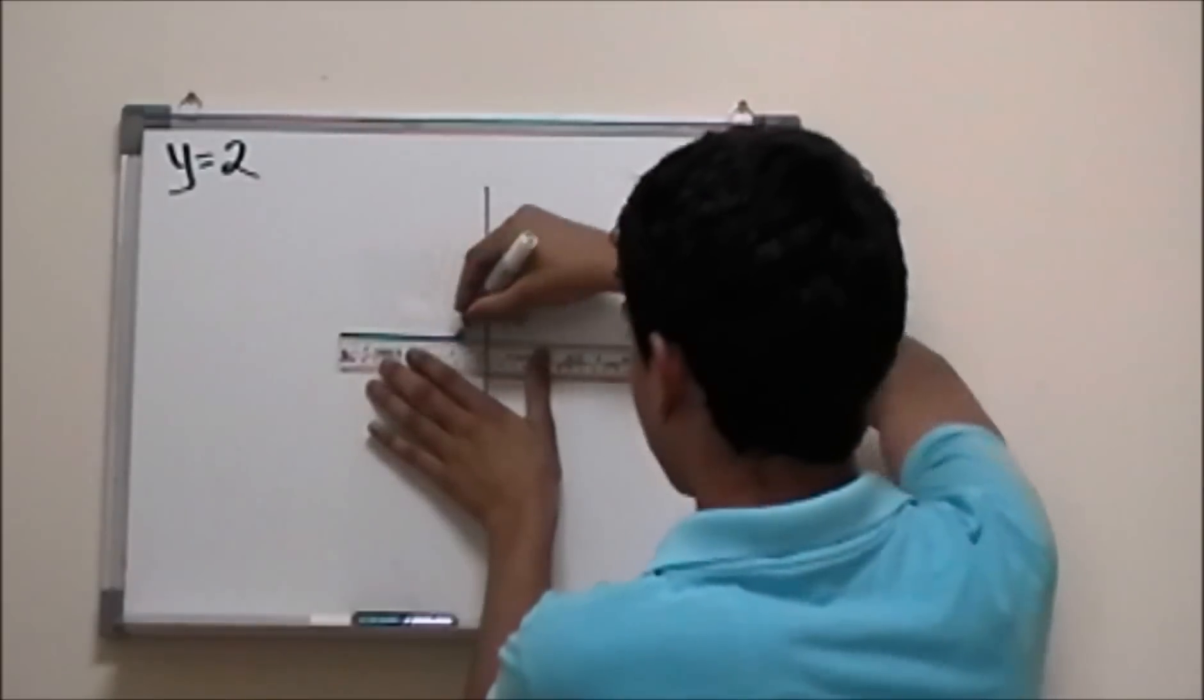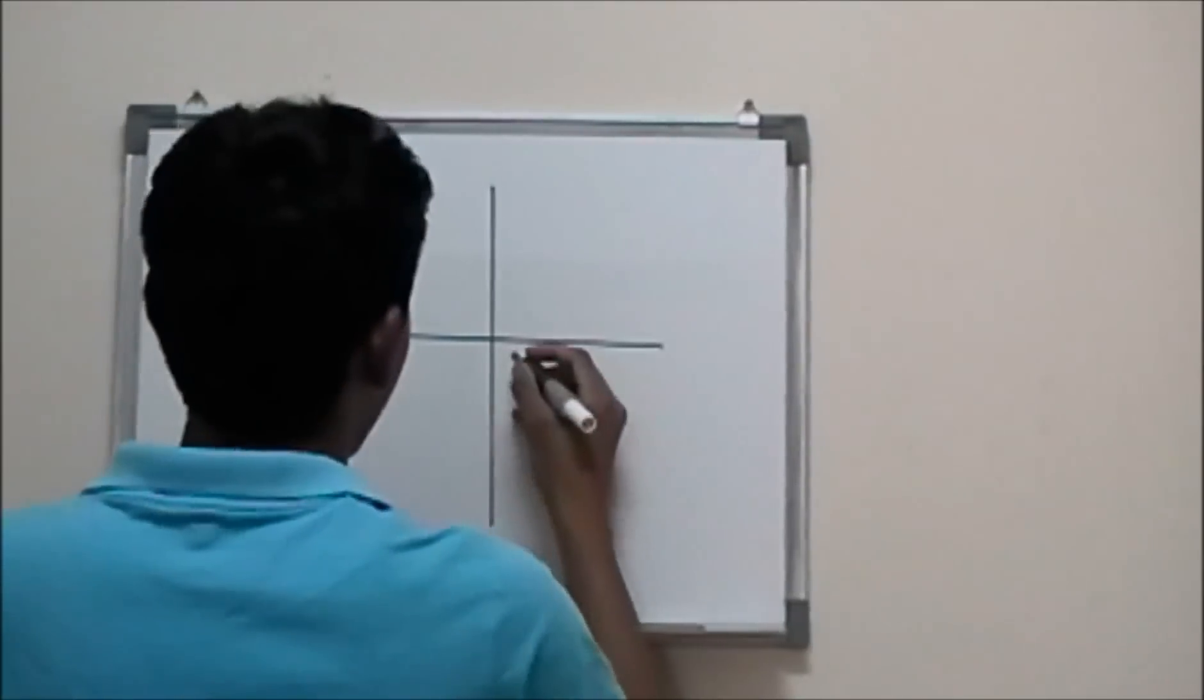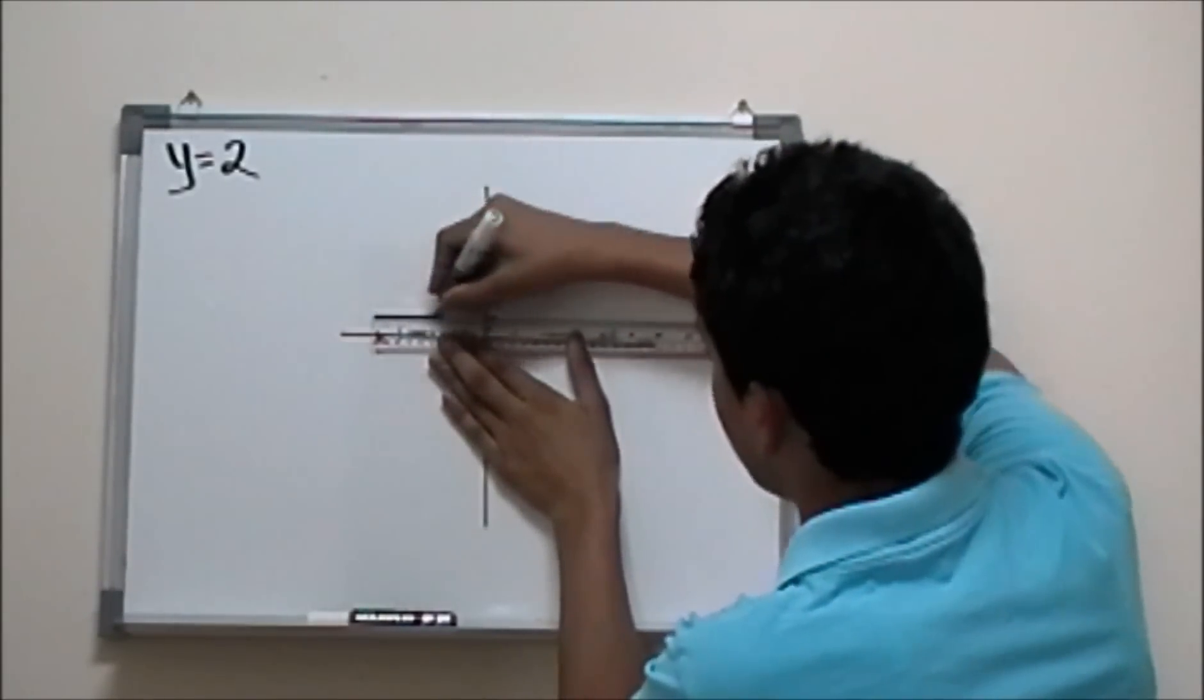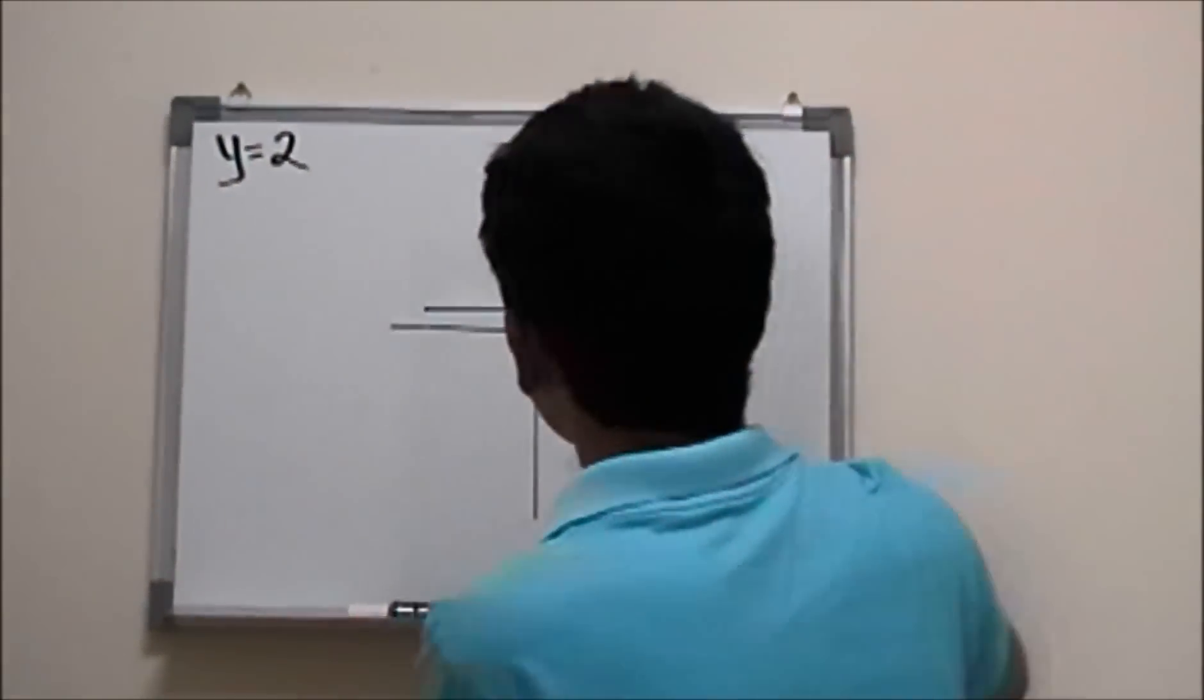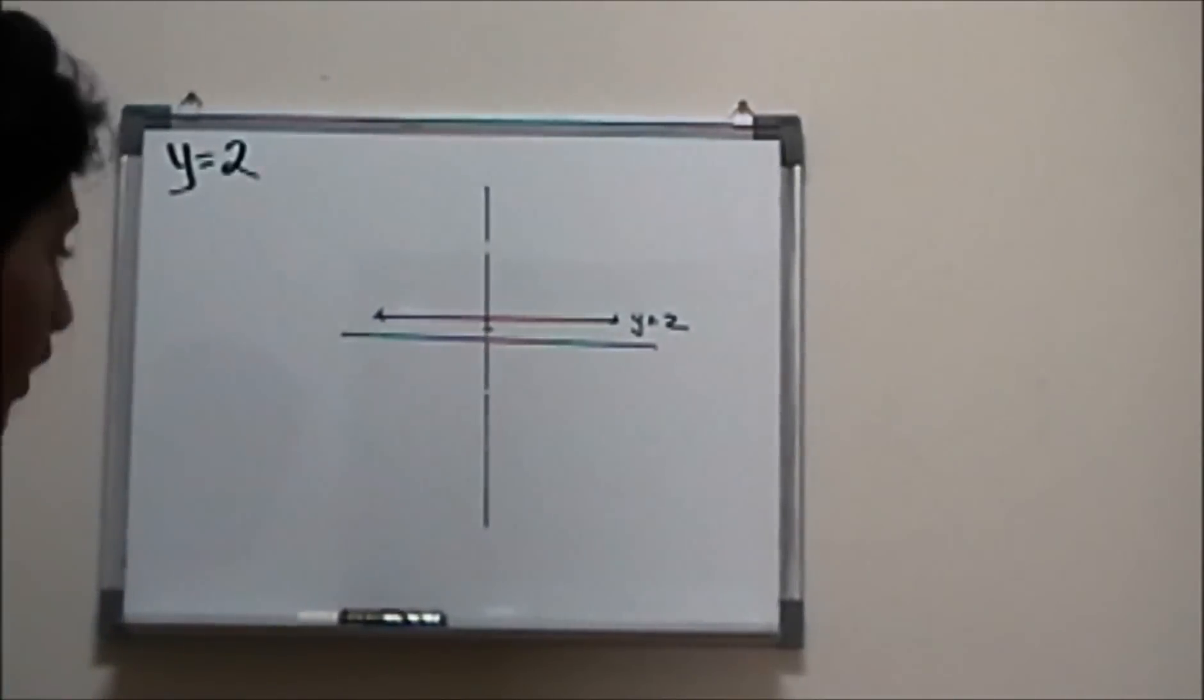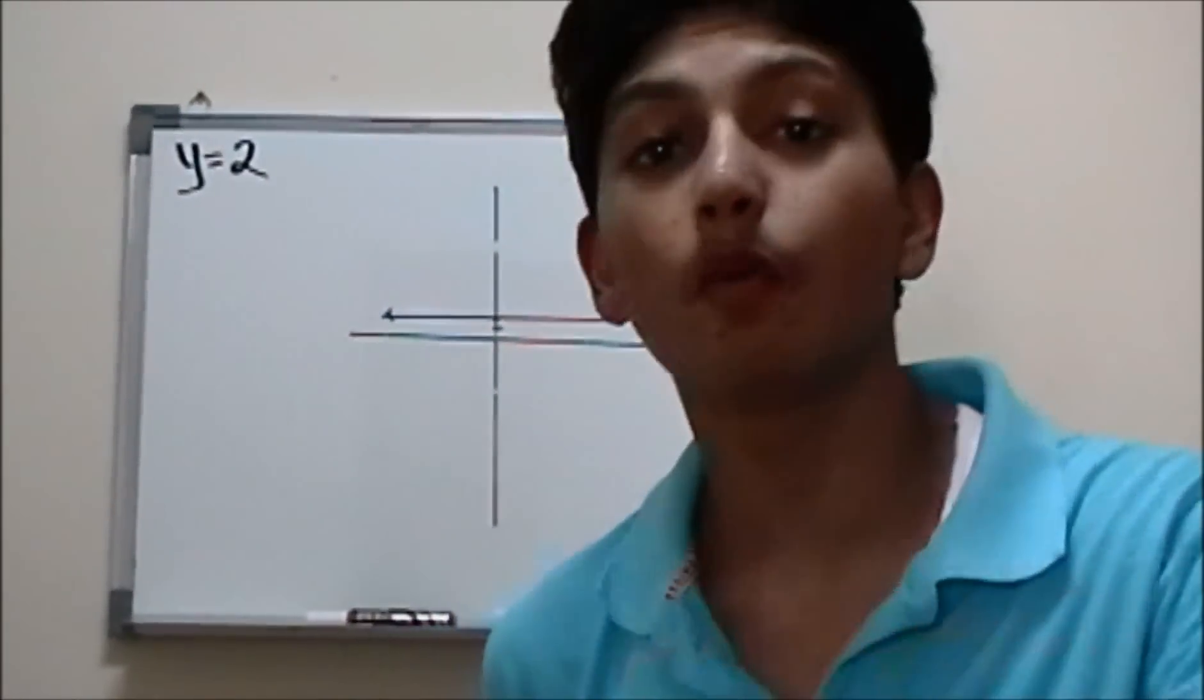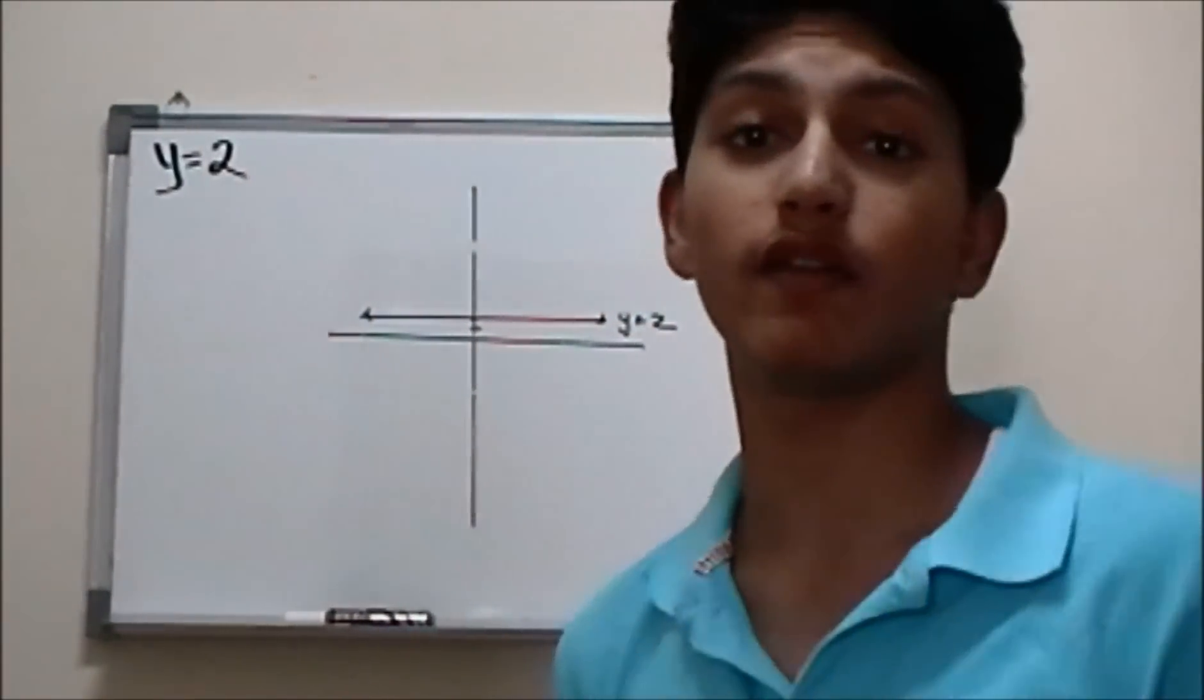So if you were to graph this, and this is y equals two. This is y equals two. What does y equals two mean? Well, if you substitute any value for x, no matter what value of x it is, the y is always, always, always going to be the value of two.